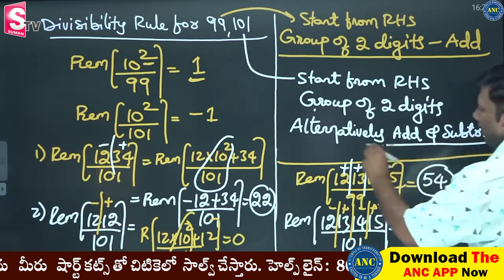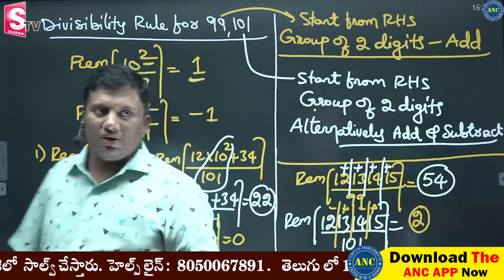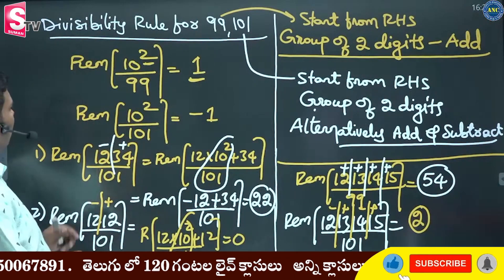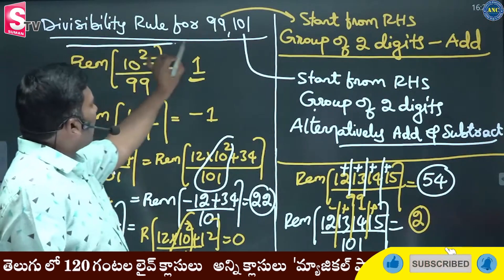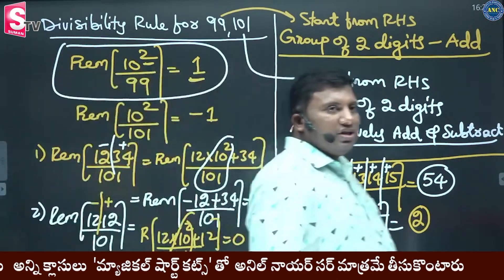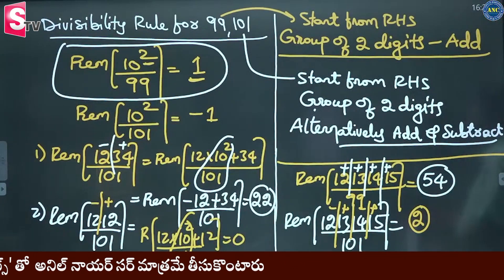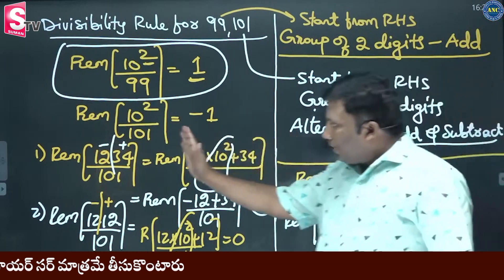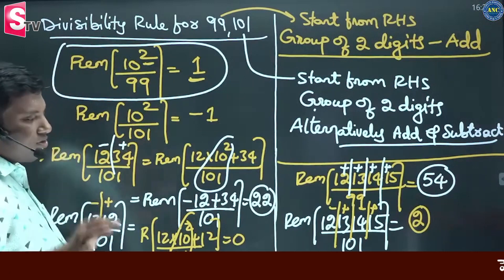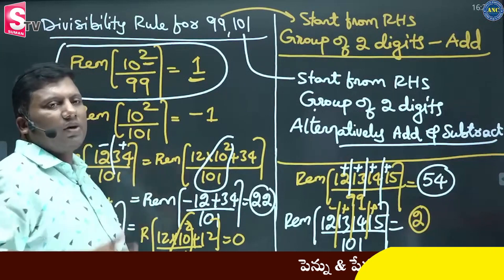If you do not know, you will not know. 99 is the divisibility rule — from the right-hand side, take a group of two digits. You can add and add. You can add and subtract. One plus or minus. You can find these concepts in regular textbooks.